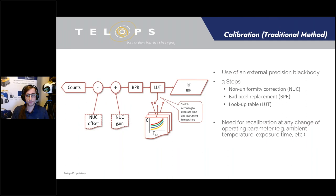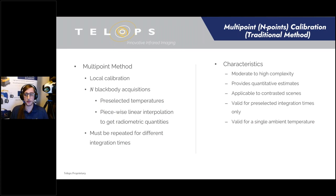Typically, thermal cameras are calibrated using a multipoint calibration scheme where the user collects multiple references from a high-precision blackbody source at varied temperatures. These acquisitions are used to create a lookup table relating the observed detector signal level to a corresponding radiance value, with entries for intermediate values generated through interpolation between measurements. In addition to exposure time, there are several other parameters which must be kept constant when using multipoint calibrations, including window size, frame rate, and even the operating environment of the camera.